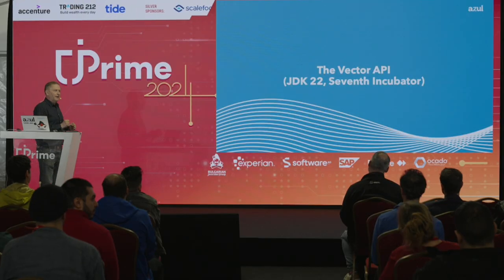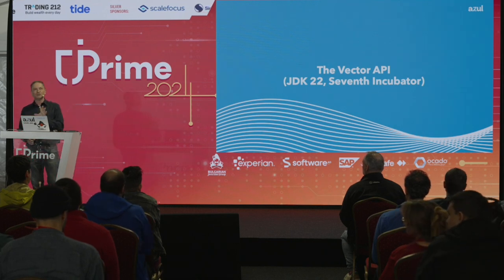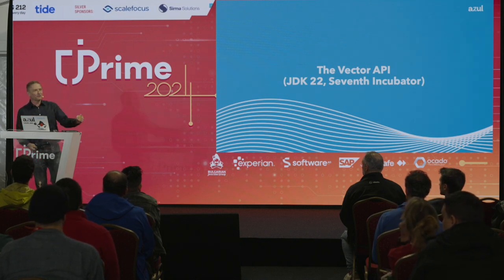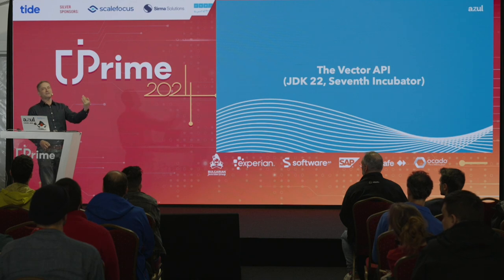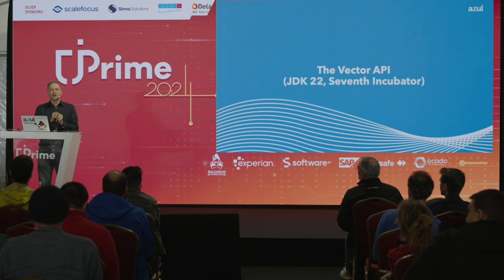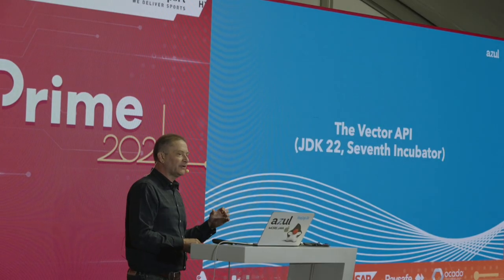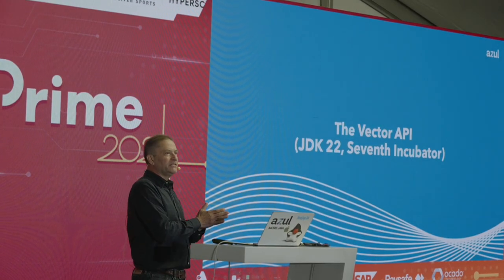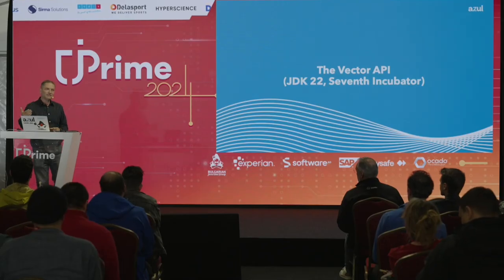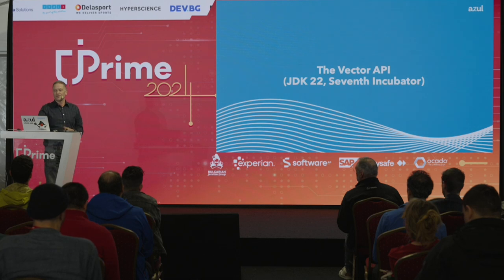The Vector API is about how we can use vectors in the processor. It holds the record as the longest incubating API in Java history — currently at its seventh iteration, going into its eighth in JDK 23. The reason is that designers are waiting for Project Valhalla to be included in Java first, since the Vector API is related to those technologies. Once parts of Valhalla are delivered, the Vector API will become final.